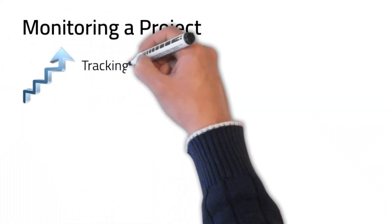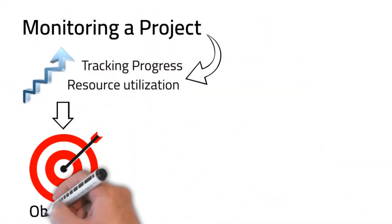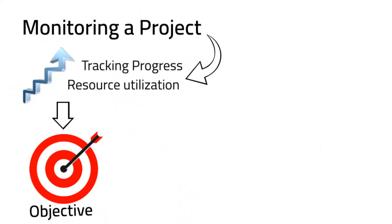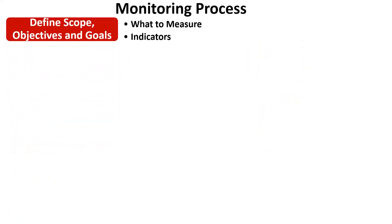Monitoring involves constant tracking of progress, performance and resource utilization over time to ensure that the project is on track and meets its objectives. The first step in monitoring a project involves clearly defining the scope of the project. Defining the scope, objectives and goals will help us understand what and when to measure, and will also help us establish the metrics and indicators that can be used to monitor the progress of the project.